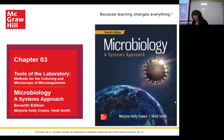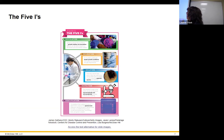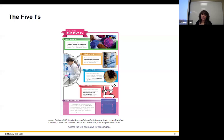Chapter three covers the tools of the microbiologist. We'll discuss different kinds of media organisms can grow on and the microscopes used to view them. The five I's are: inoculation, incubation, isolation, inspection, and identification — the steps you go through to figure out what's causing a problem.